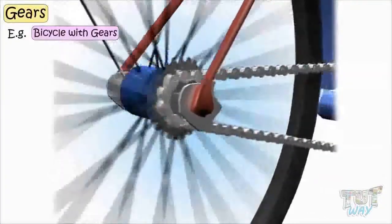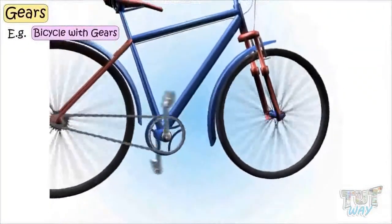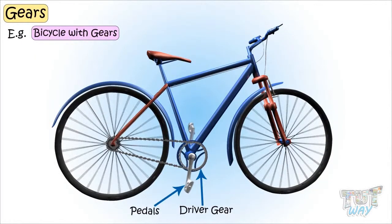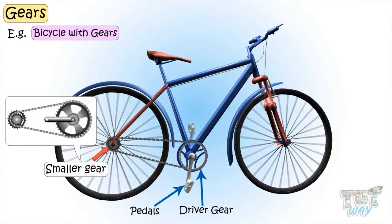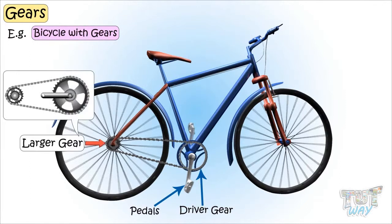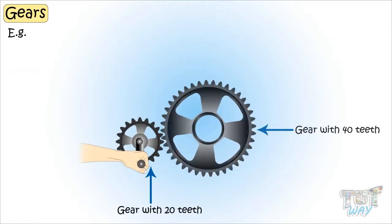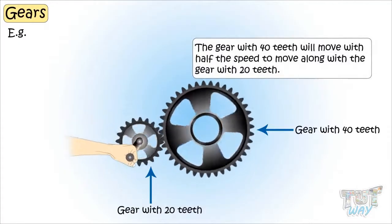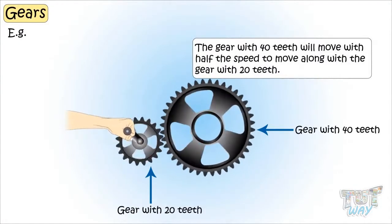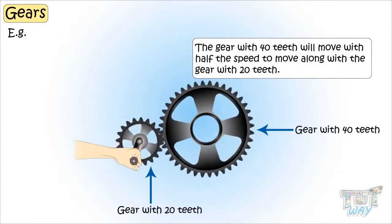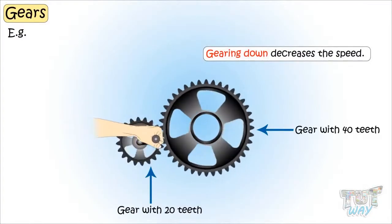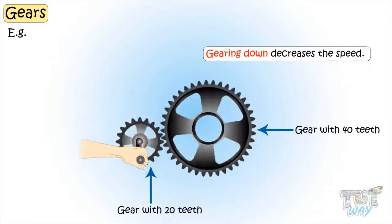In our cycle, the driver gear is attached to the pedals. When the driver gear turns a smaller gear, the cycle runs faster — this is gearing up. When the driver gear turns a larger gear, the cycle runs slower — this is gearing down. For example, if a gear with 20 teeth turns a gear with 40 teeth, the 40-teeth gear will move at half the speed. This is gearing down, and gearing down decreases the speed.